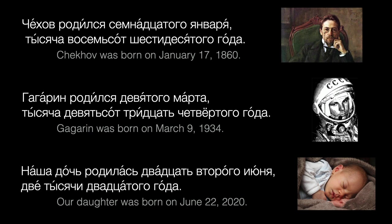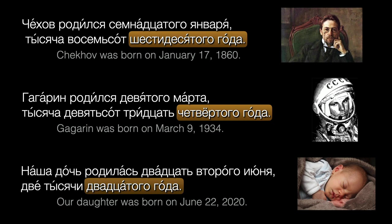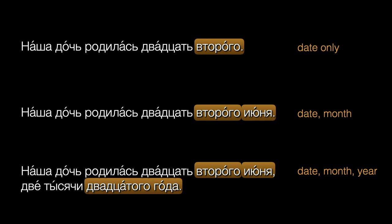The year is in the genitive too. You can think of it this way: whenever we mention the specific date something happens, everything will be in the genitive — whether it's the date alone, the date and the month, or the date, month, and year.